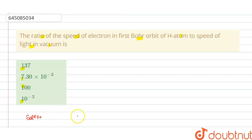So the solution of this question is, we know that speed or velocity of electron in first Bohr orbit of H atom